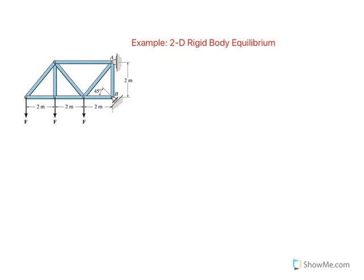One note before we get started: our objective here is only to find the external reactions at A and B. Later on, we'll look at truss problems where the objective is to find the internal forces — the forces in different members or all members of the truss.